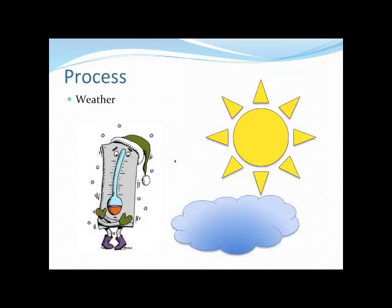Pay attention to the weather. Are you seeing a deficiency symptom? I look back at what the weather has been like — has it been really sunny, really cloudy? Have temperatures accidentally dropped in the greenhouse because the furnace went out or somebody turned the thermostat down too low for night temperatures? Are we trying to grow those plants too warm or too cold for that crop? That might be leading to deficiency symptoms.